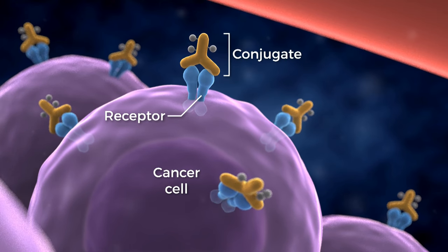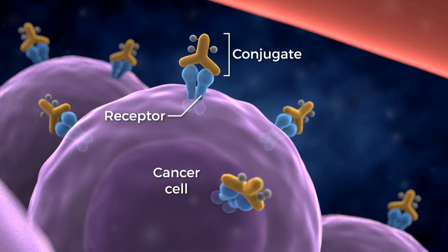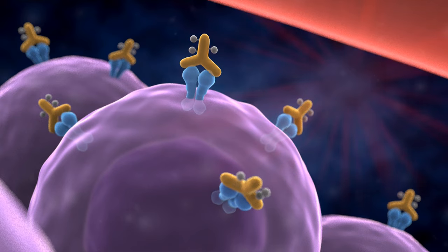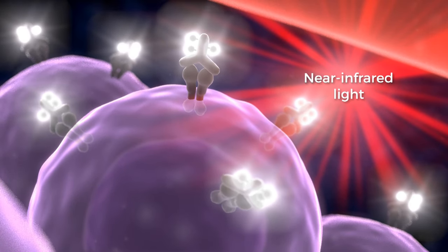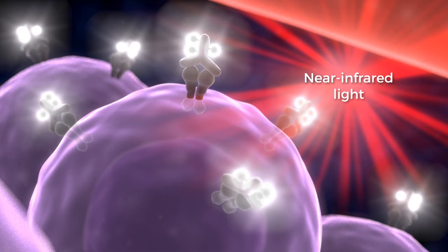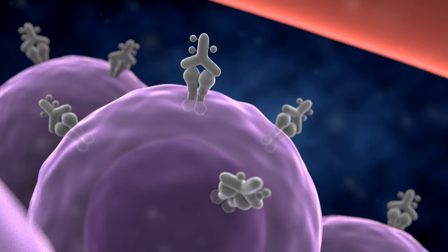Once the conjugate is bound to cancer cells, the photoabsorbing chemical can be specifically activated by near-infrared light. When the chemical has been activated, it causes immediate damage to the cell membrane.